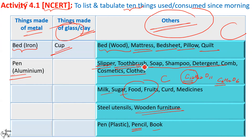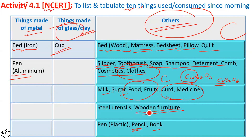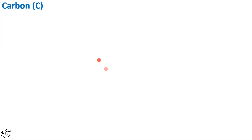The clothes we wear, the medicines we consume, the paper we write on, the book we read, the pen and pencil we use, plastic containers, combs, rubber, stainless steel in the form of utensils — and the list goes on. All these items are based on a very versatile element, carbon.